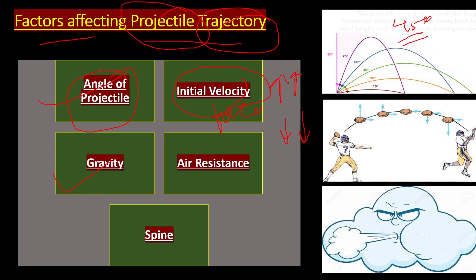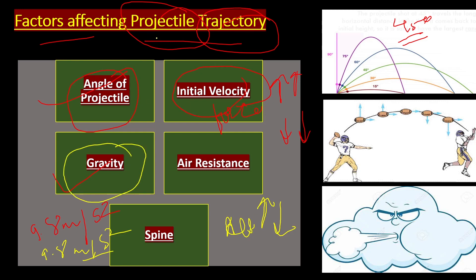Third factor: gravity. Gravity is the natural force that makes things fall to the ground when dropped. At the surface of the Earth, gravity's value is 9.8 m/s². At different locations gravity varies; at higher altitude gravity decreases. Gravity affects the projectile's trajectory. Fourth factor: air resistance — when any object is thrown into the air, air provides resistance which reduces the object's speed somewhat, thus affecting the trajectory.